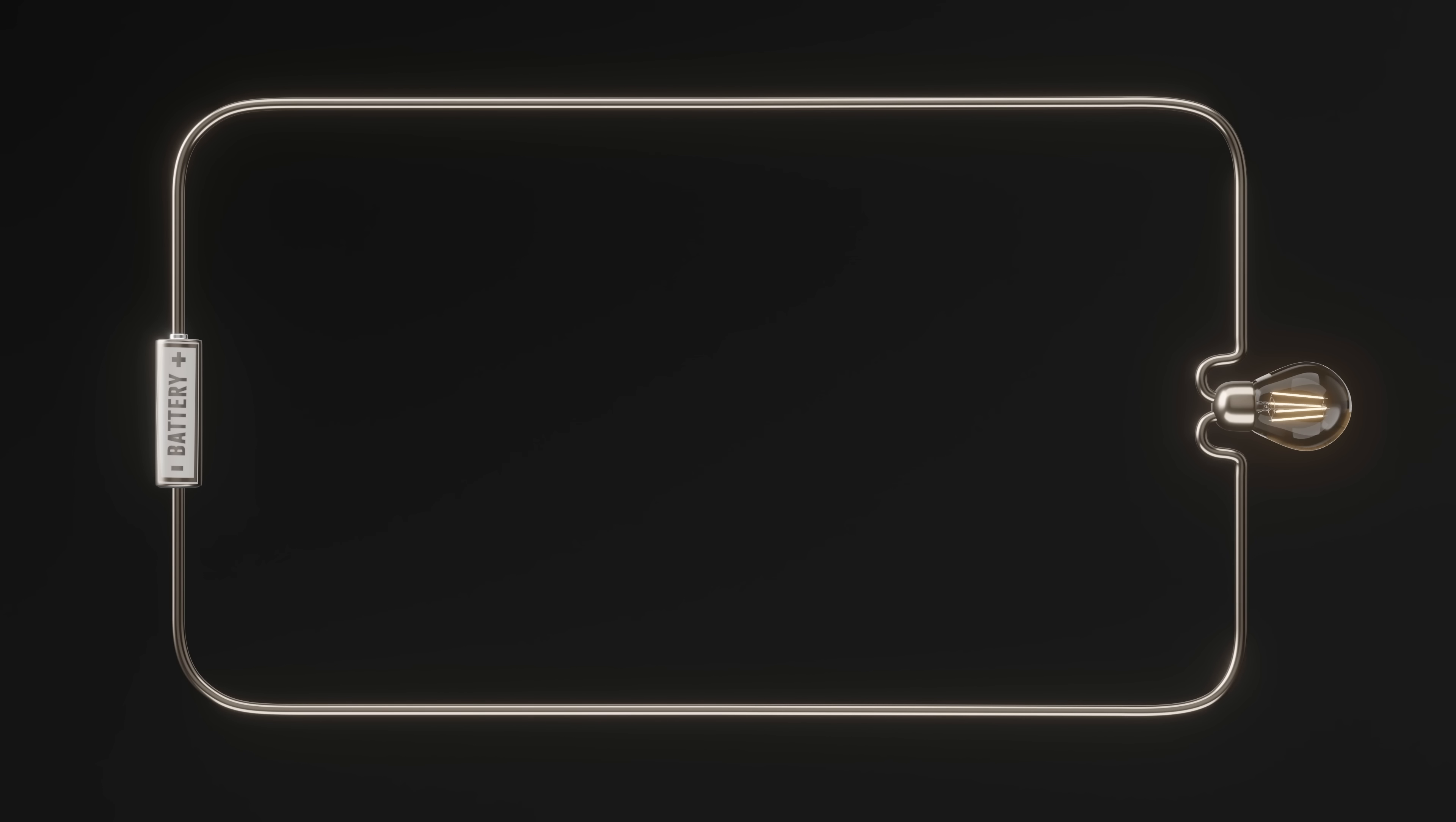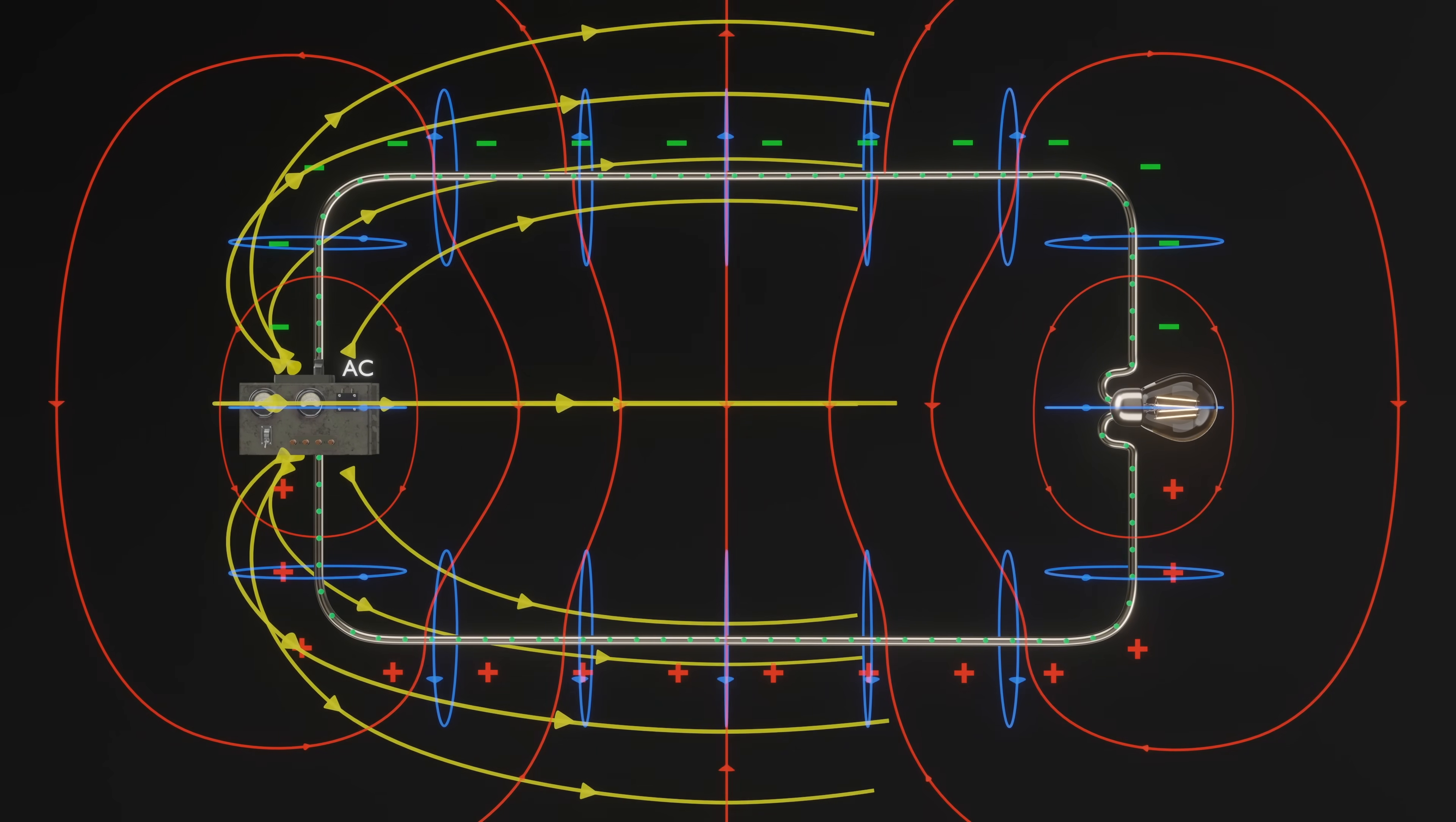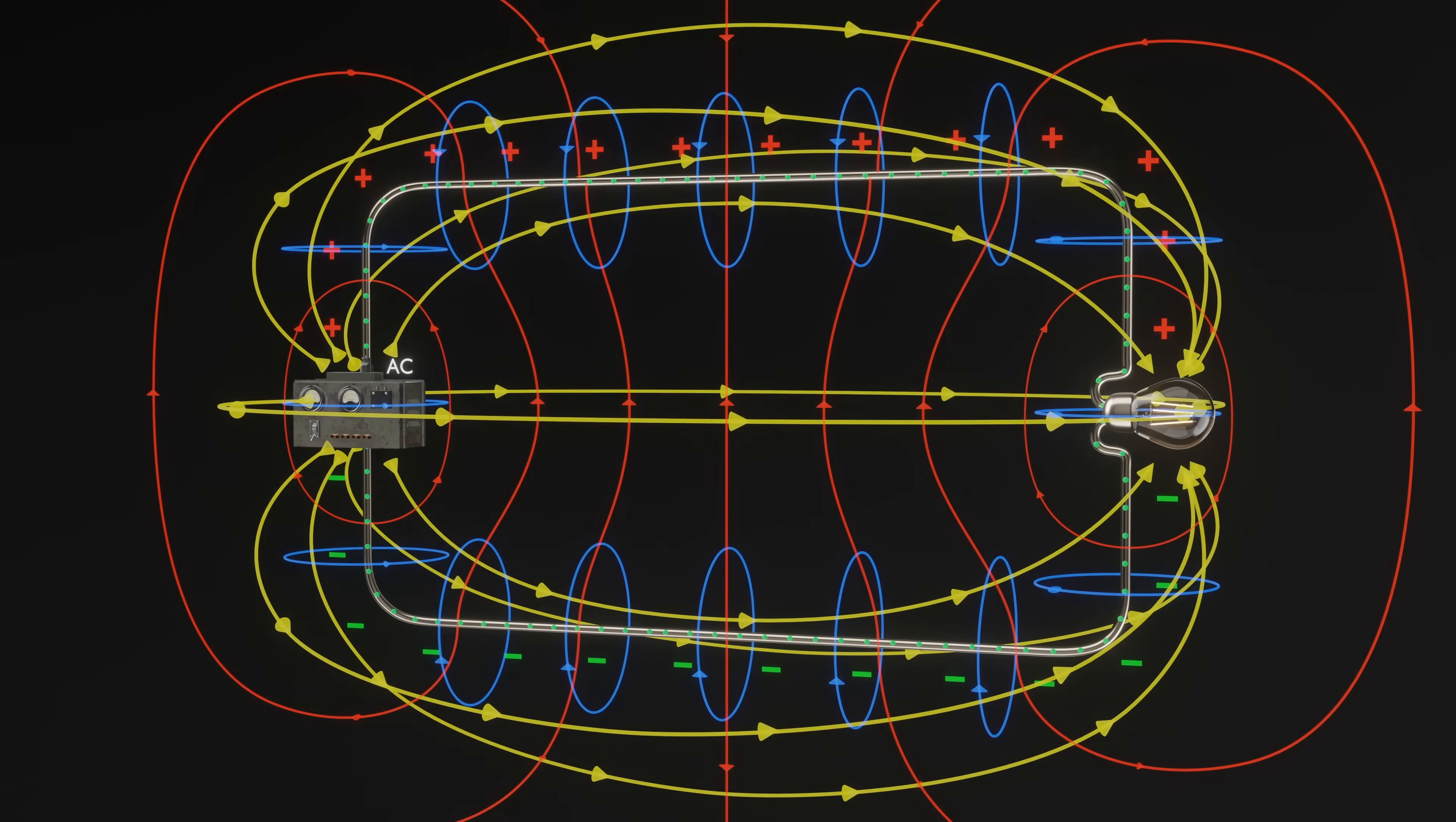Now what happens if in place of a battery we use an alternating current source? Well then the direction of current reverses every half cycle. But this means that both the electric and magnetic fields flip at the same time. So at any instant the Poynting vector still points in the same direction from the source to the bulb. So the exact same analysis we used for DC still works for AC.